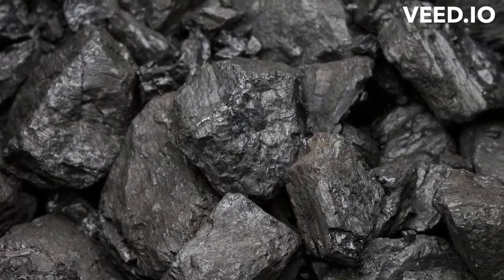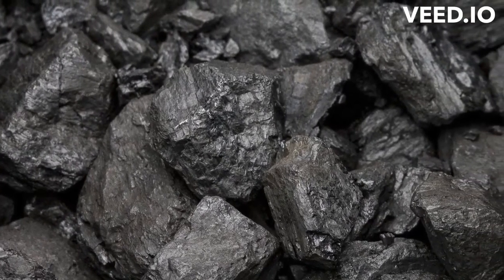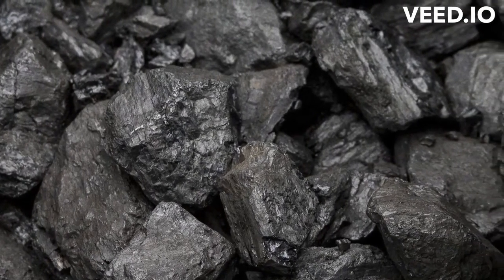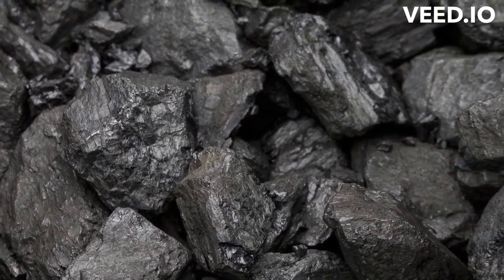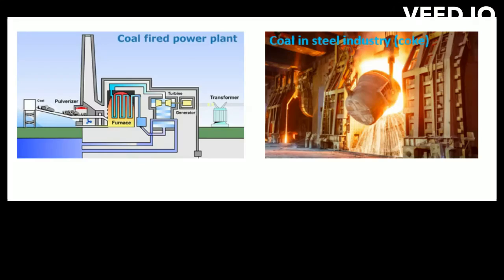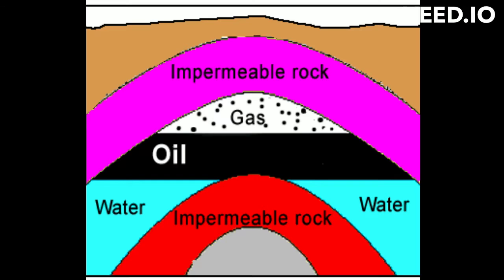Coal contains carbon, volatile matter, moisture and ash. However, in some cases coal may contain sulfur and phosphorus. It is mostly used for power generation and metallurgy. Coal reserves are six times greater than oil and petroleum reserves.